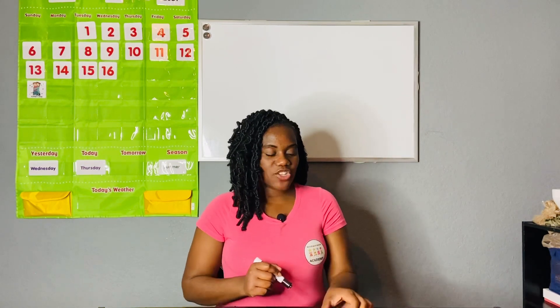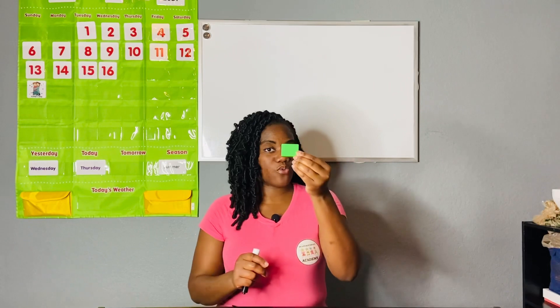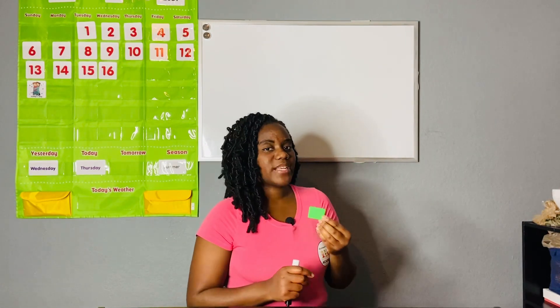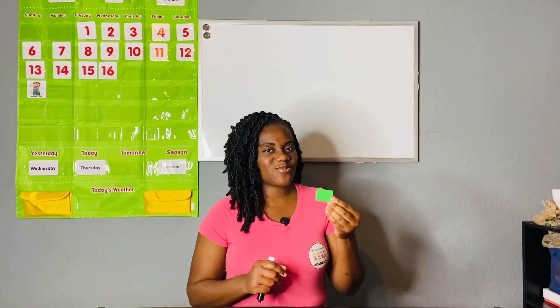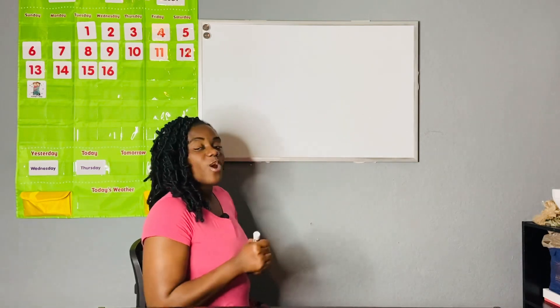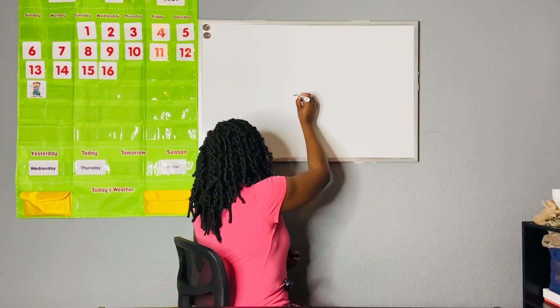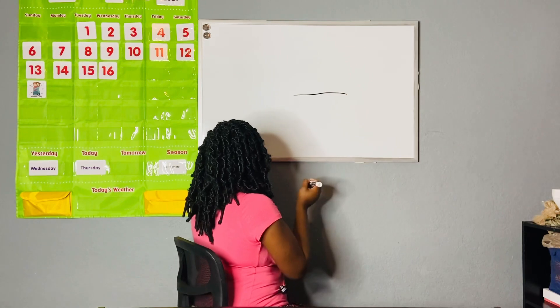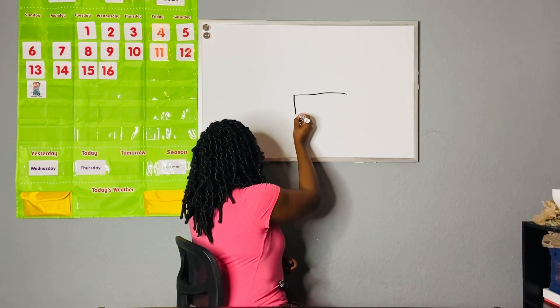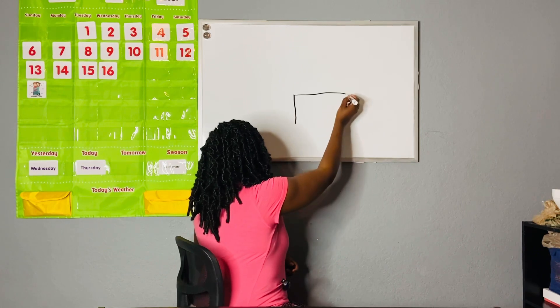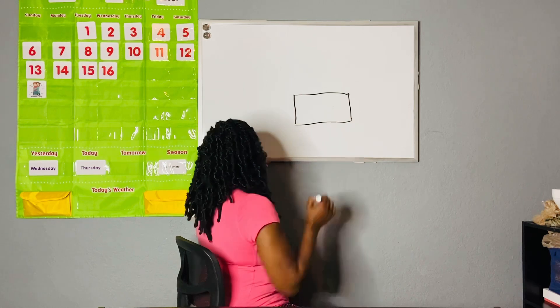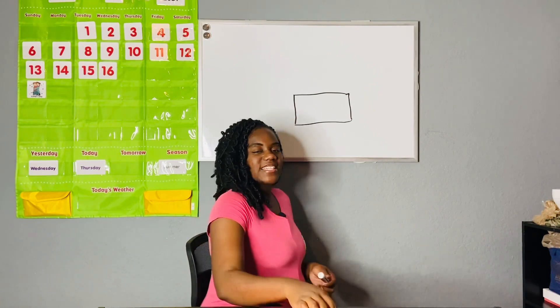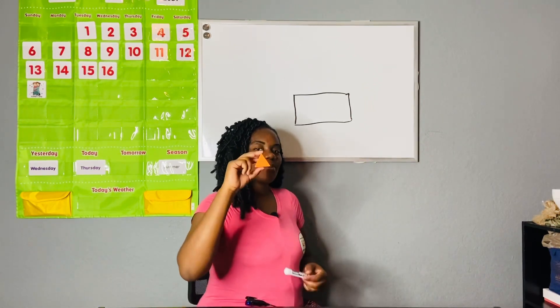Let's learn how to draw our different shapes. First, we're going to draw the rectangle. Grab a pencil, grab some paper, and let's get to drawing. To draw a rectangle, first make a line going across, then one line going down, another line going down, and then one line on the bottom going across. That is a rectangle.